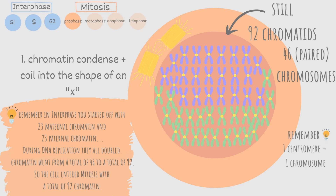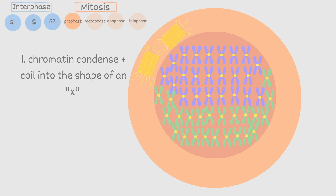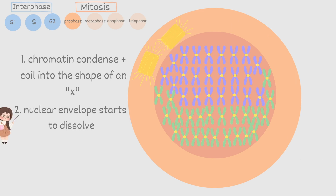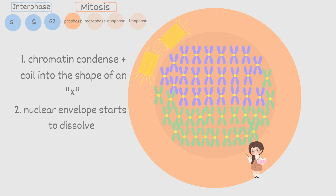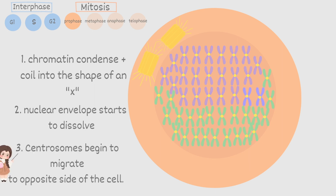Remember we count the number of chromosomes by counting the number of centromeres — so here we have 46 centromeres, meaning 46 chromosomes. In prophase the nuclear envelope also starts to dissolve, which will eventually make it easier for the cell to split. Lastly, the centrosomes will begin to migrate to the opposite sides of the cell, also called the opposite poles.